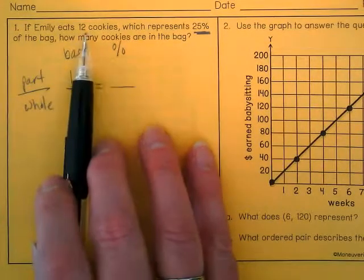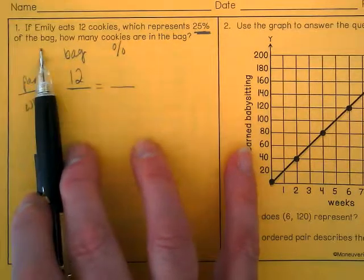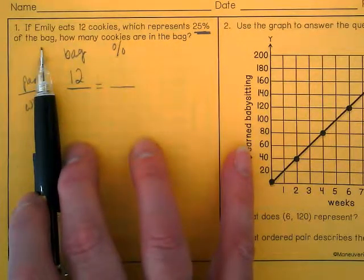Okay, so the question says if Emily eats 12 cookies, which represents 25% of the bag, that gives us a lot of information about how to set this up.